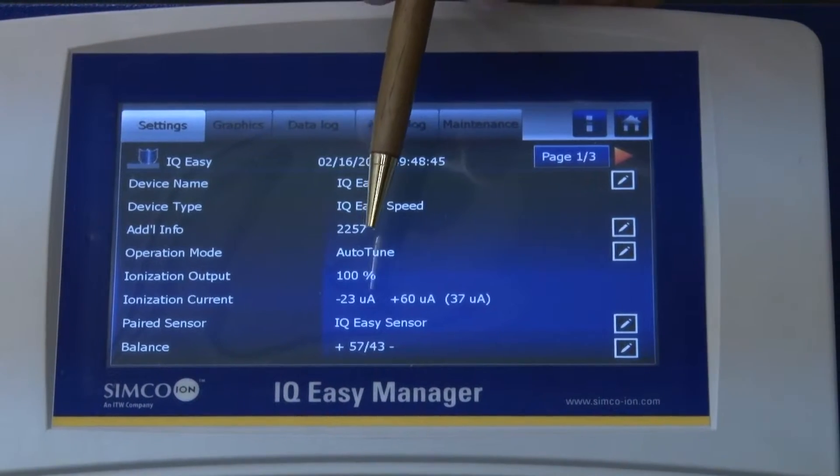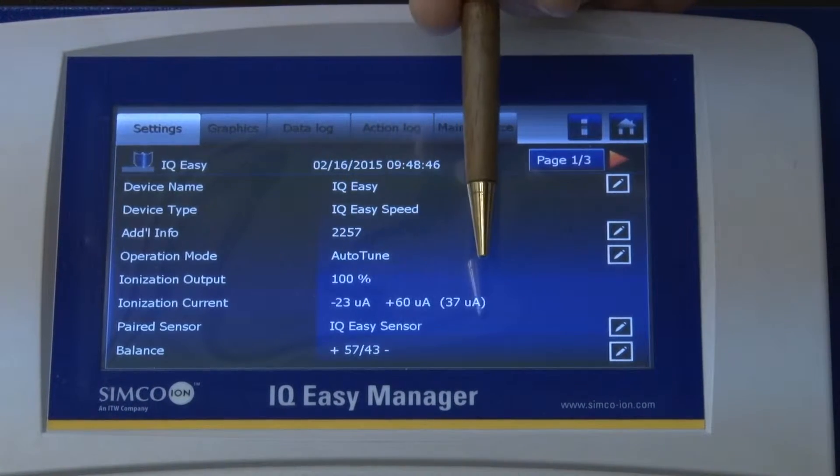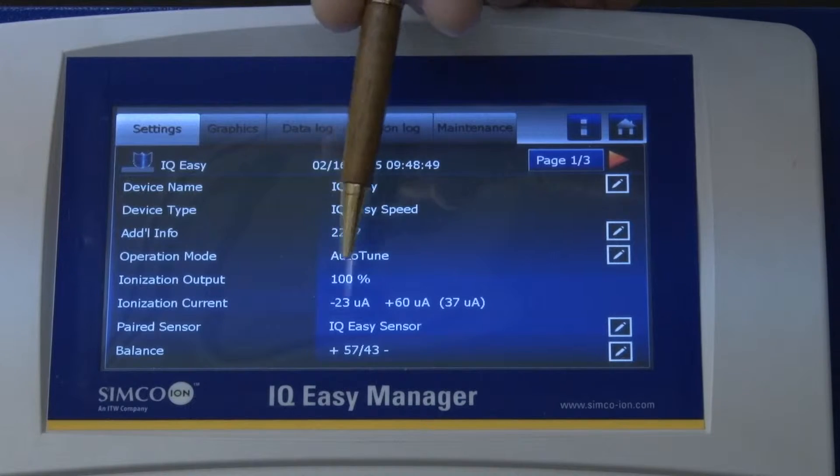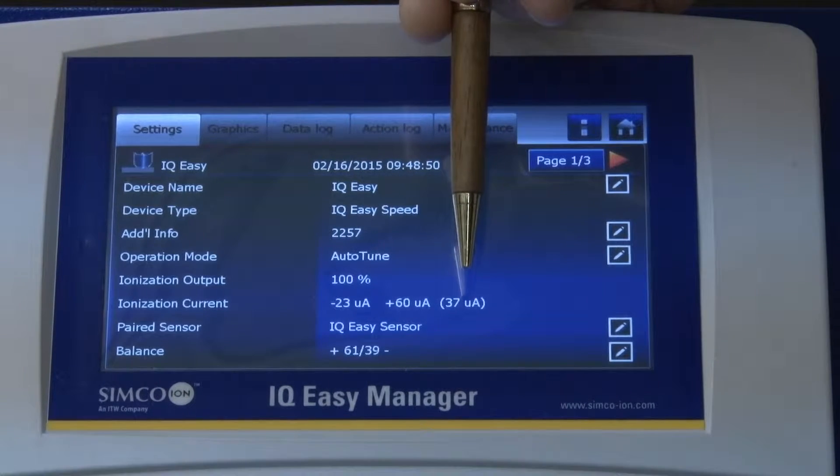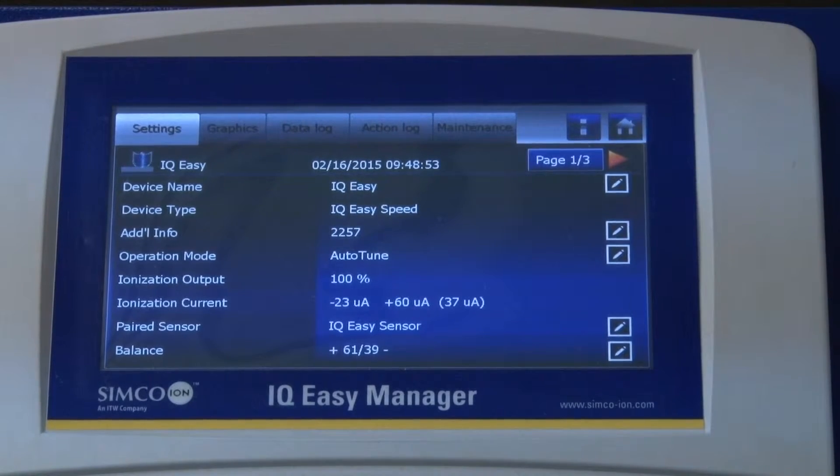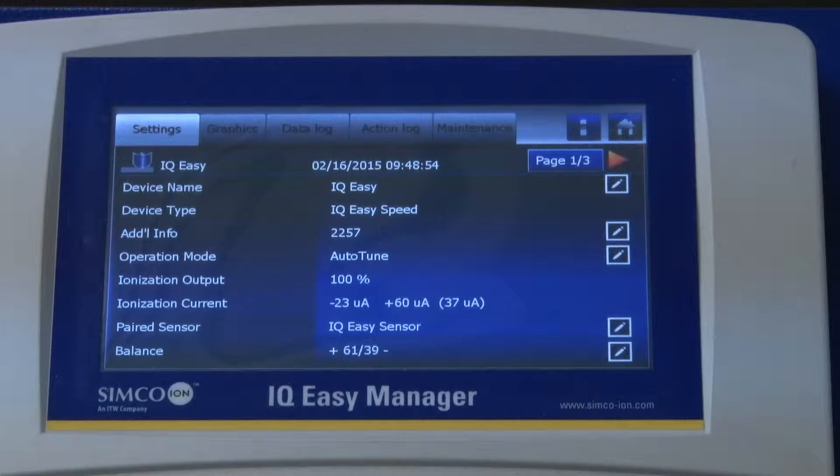The auto-tune mode will utilize the differential in the neutralizing currents to determine how to change the output of the bar to further reduce the web charge.